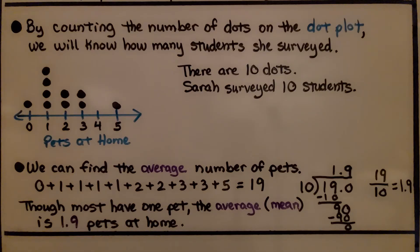We can find the average number of pets. We add up all the data values. It's going to equal 19. There are 10 data values because there's 10 dots. We do 19 divided by 10 and we get 1.9. Though most have one pet, the average, the mean is 1.9 pets at home.